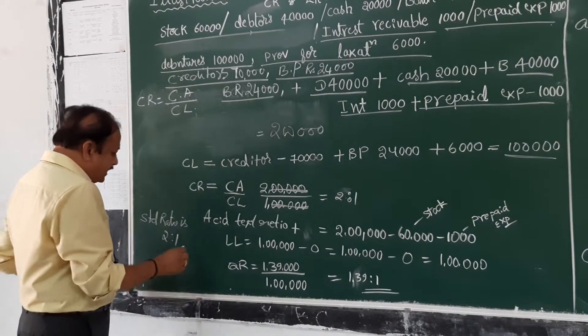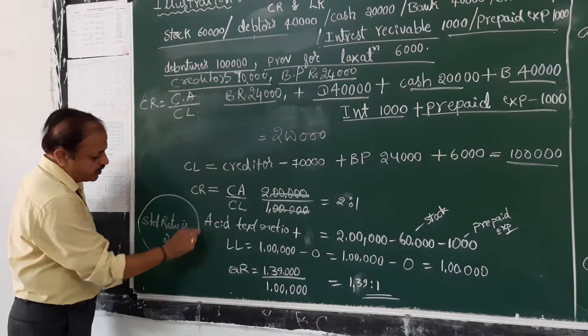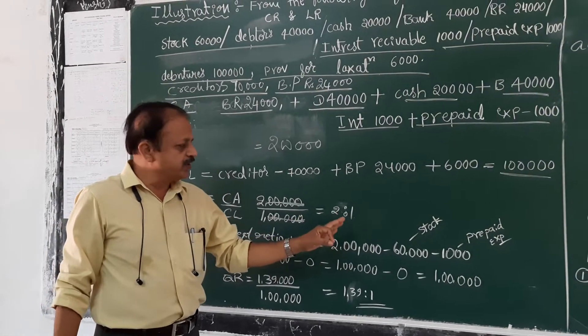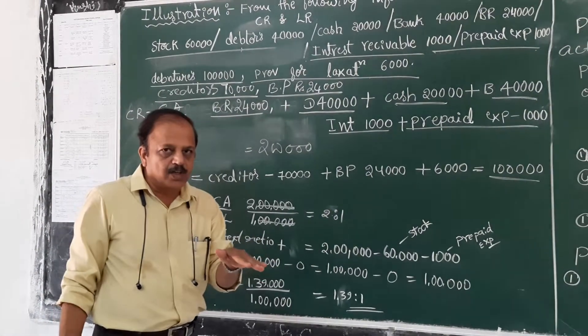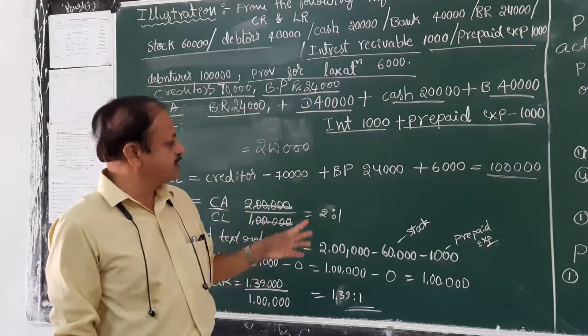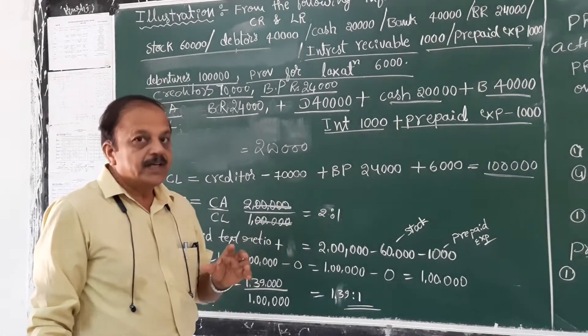The standard current ratio is 2 is to 1. Here in our problem, current ratio is 2 is to 1. This is exactly equal to the standard ratio. It means the company is able to meet its short-term obligations very easily. The company's short-term solvency is strong.